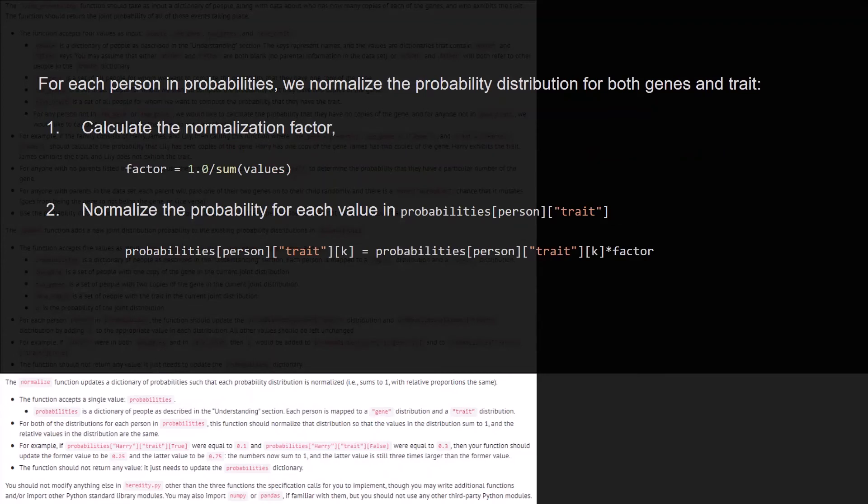And finally, we normalize the data. So for each person in probabilities, we normalize the probability distribution for both genes and traits. In this case, we calculate the normalization factor, which depends on the sum of the values for the specific calculation. So then we normalize the probability by multiplying each value in probabilities person, for example in trait or genes, and we multiply it by the factor.